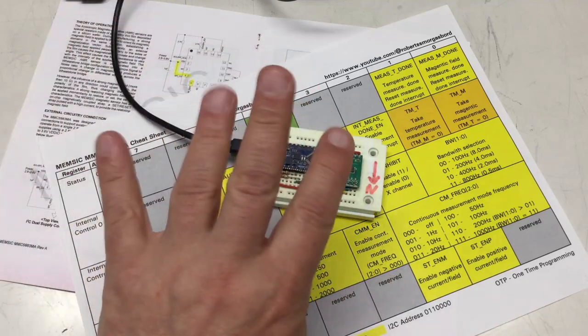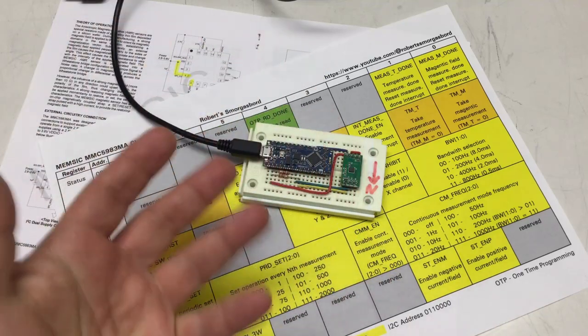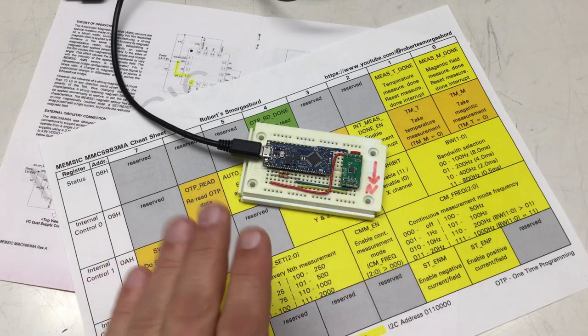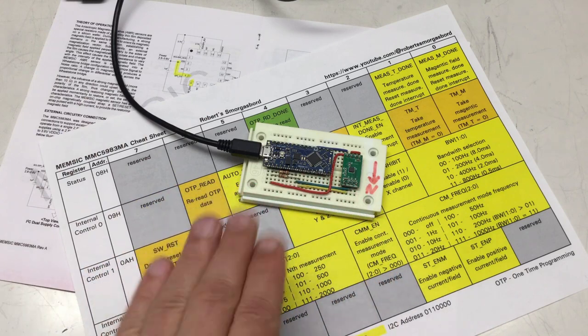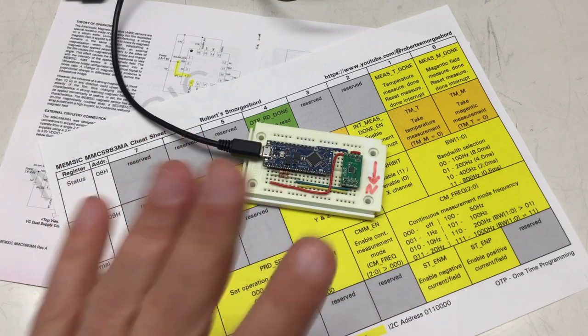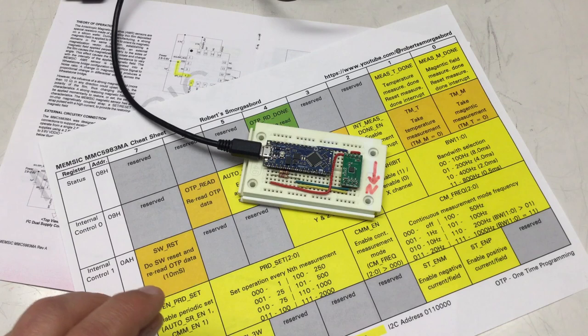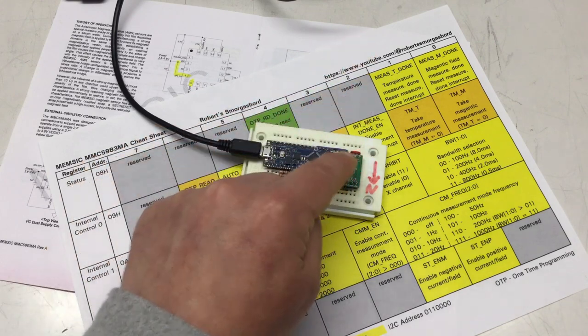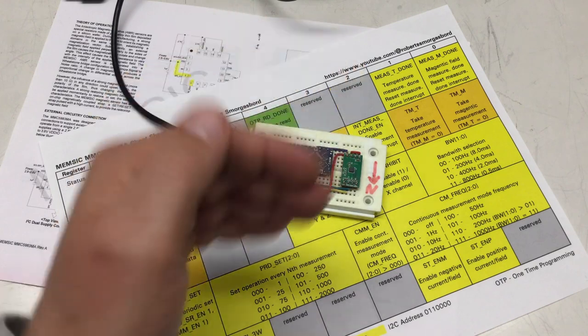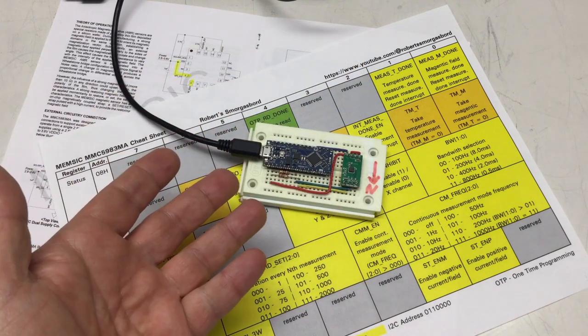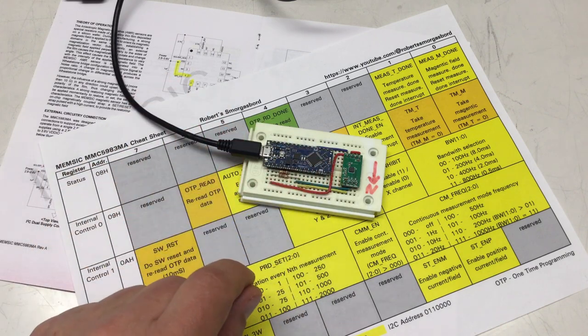Welcome back to the now third video about the details of the amazing MEMSIC MMC 5983MA 3-axis magnetic sensor. In the previous two videos, we did some magnetic field and temperature measurements and we read out the corresponding data from the chip.